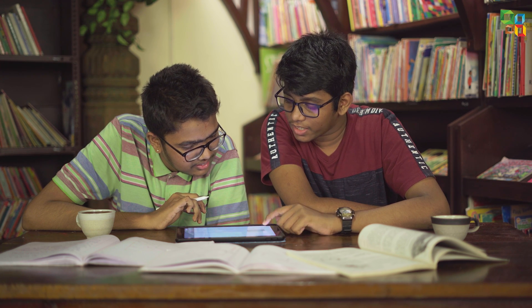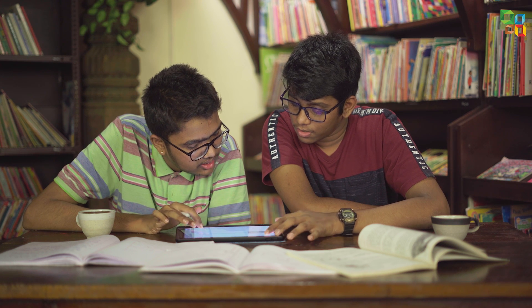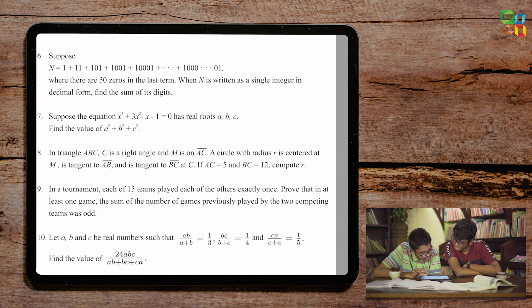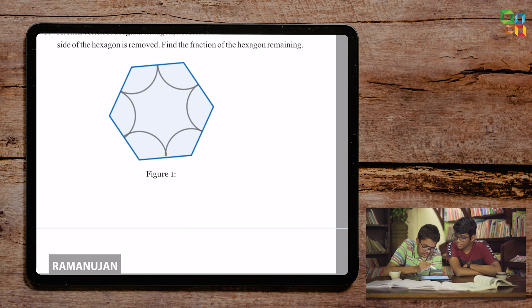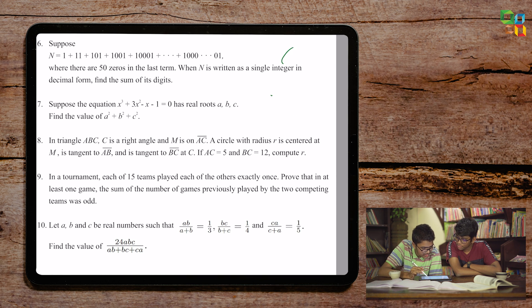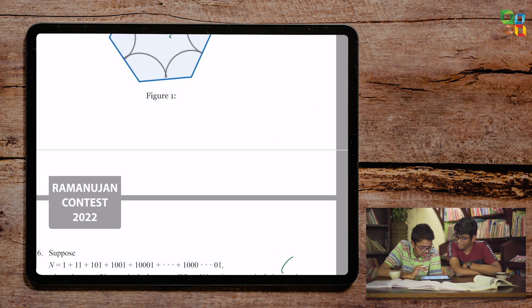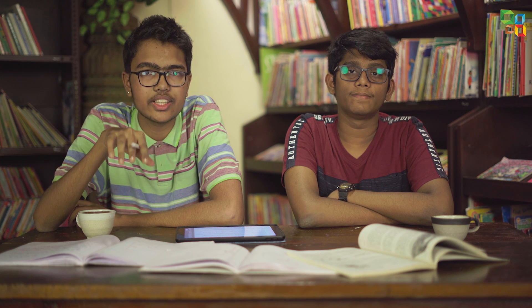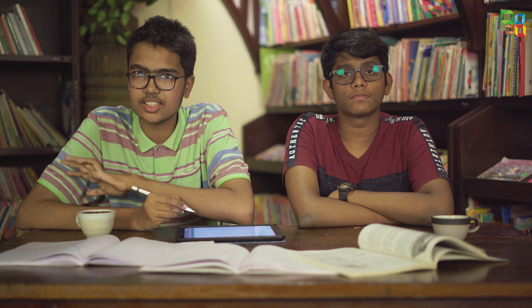Overall, the paper was moderate — some questions were difficult, like the one we just discussed, and some were easy. The tenth question was the easiest, the geometry ones were moderate, and the fourth was a tough question. The Ramanujan contest is held every fourth Sunday; the next contest is on May 22nd. Anyone who attempts at least eight tests gets a complete refund of their registration fees. If you want to register, the link is available in the description below.